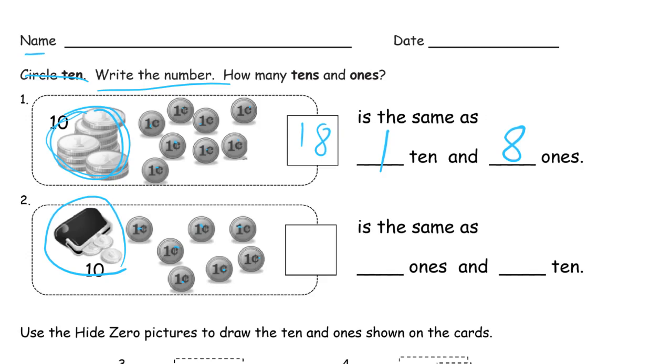10 and 7. 10, 7, 17 is the same as how many ones are there? There's 7 ones and there's 1 group of 10.